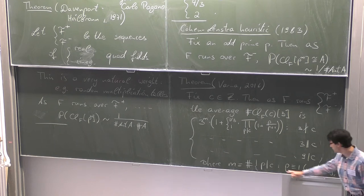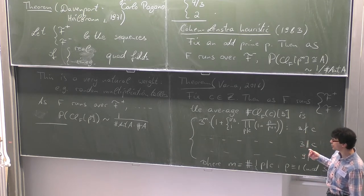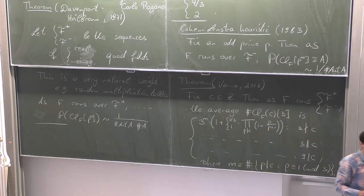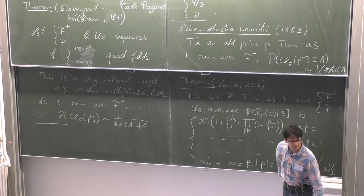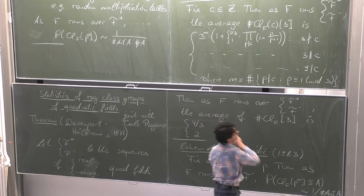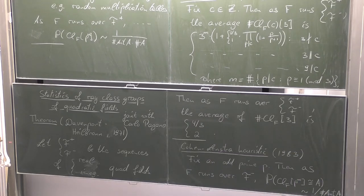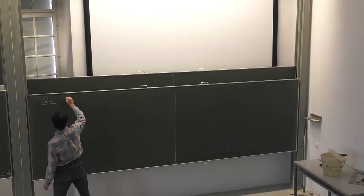If you think about class field theory, it's not surprising that these prime divisors are somehow special. If Gauss had known class field theory, he would have been just as interested in these ray class groups as he was in class groups. Since then, Ila and Manjul have been going around asking everybody: can you explain what these numbers mean? This is now where I get to state what our goal is for today.